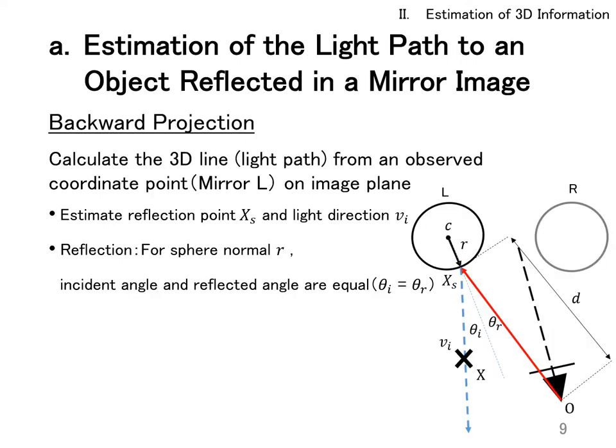The first step is to estimate the ray path to the object reflected in the mirror image. This is done by estimating a 3D straight line from the observed coordinate point in the captured image. What we actually need is the 3D position Xs and ray direction Vi of the reflection point. It is based on the reflection law of the specular surface. The angle of incidence and the angle of reflection are determined such that it satisfies the law of reflection.